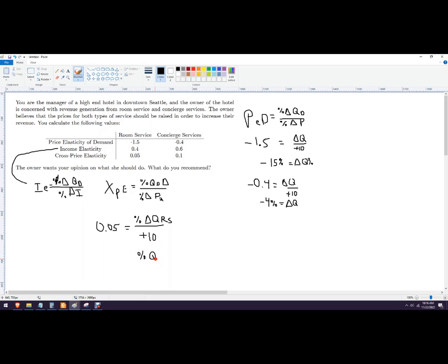So multiply this out. We get a percent change in quantity of room service of 0.5 percent. So they're not huge substitutes, but they are substitutes. So you will increase your quantity sold of room service by half a percent if you raise the concierge service price by 10 percent. This one matters a little bit more - if you were to increase room service, you'll get more of an increase in concierge services.